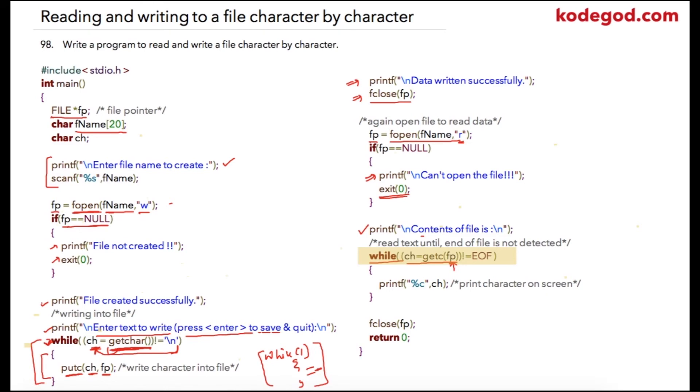If the current character is not equal to end of file that means we have not yet reached at the end of the file. So till the time we don't reach to EOF we can keep on printing ch which we have read using this function and it will print it as a percent c.